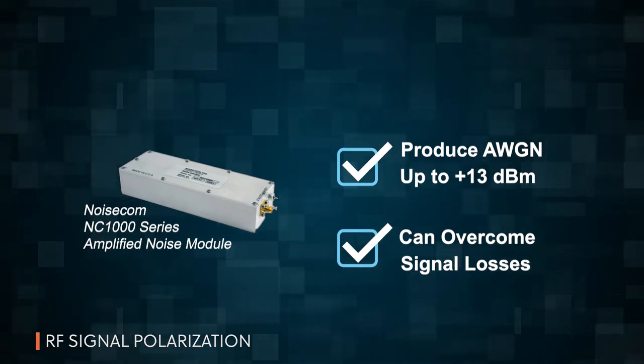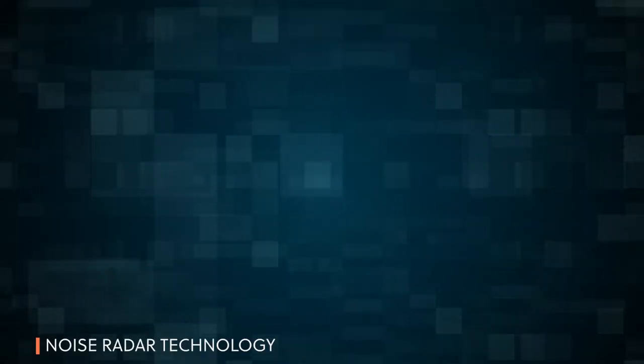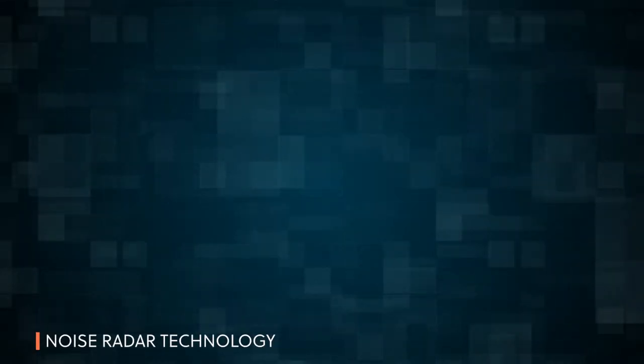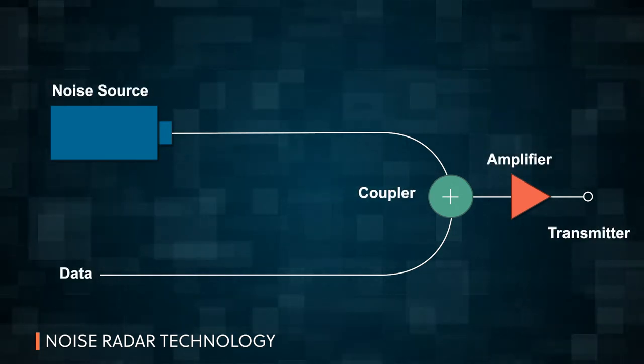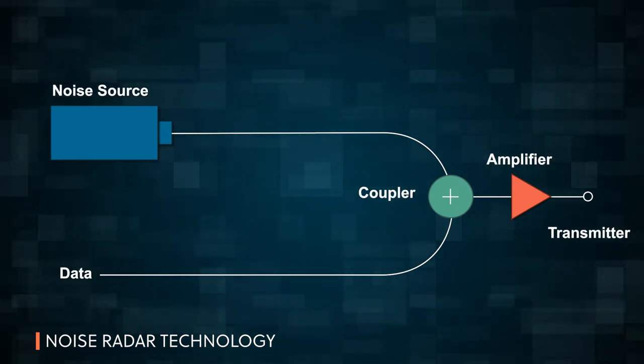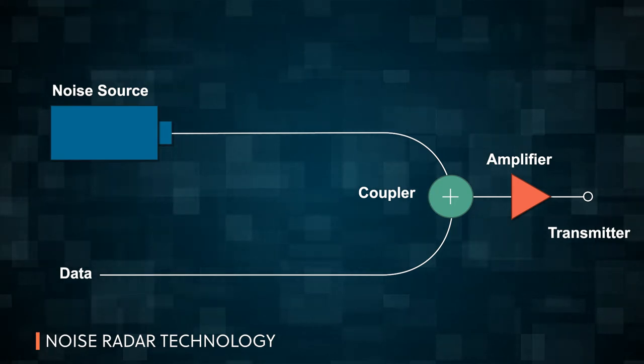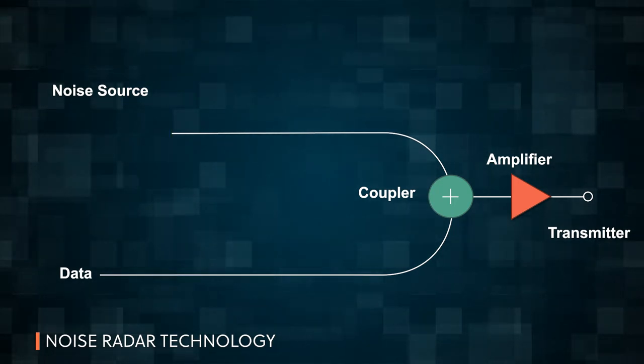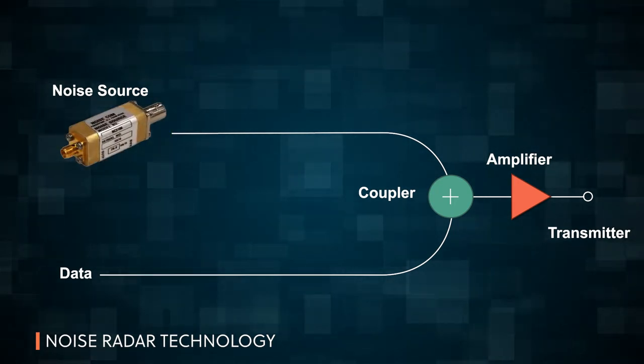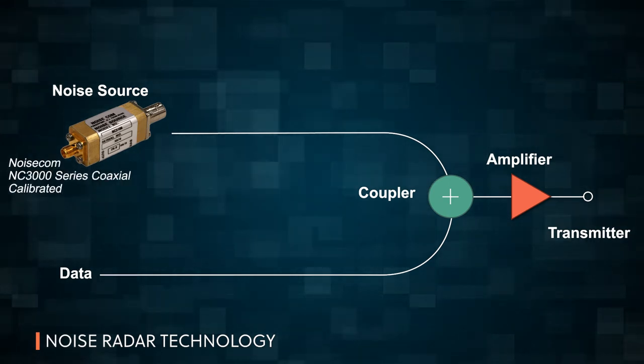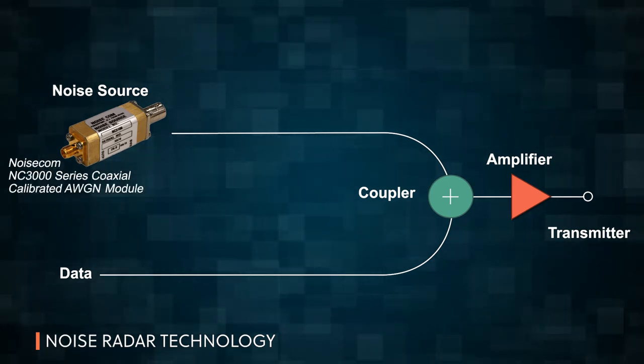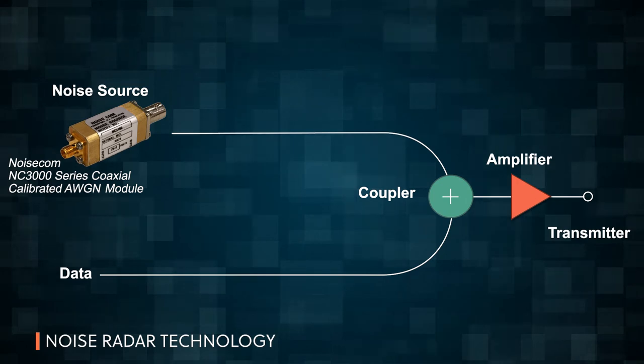Noise can also mask transmit signals using noise radar technology. If the noise source is integrated early in the encryption process, like where the data is being manipulated and before amplification, then noise sources such as the NC-3000 series calibrated coaxial AWGN modules can optimize performance.